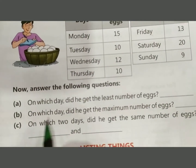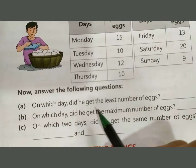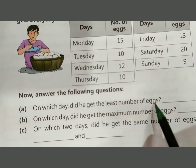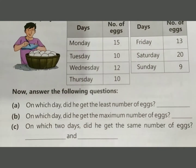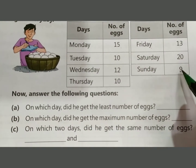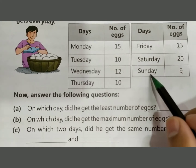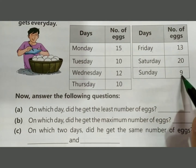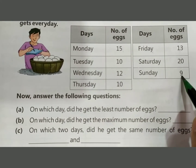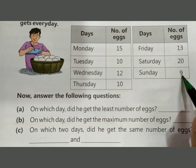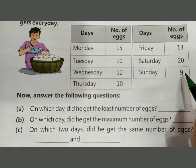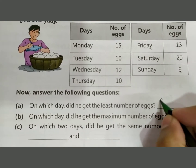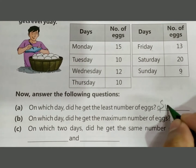On which day did he get the least number of eggs? The answer is Sunday — the number of eggs is 9, which is the least. Write Sunday.